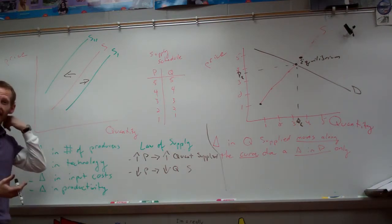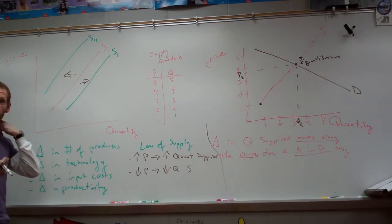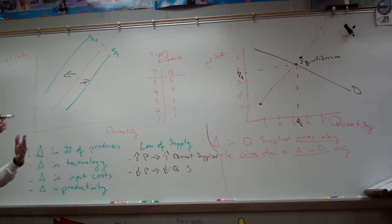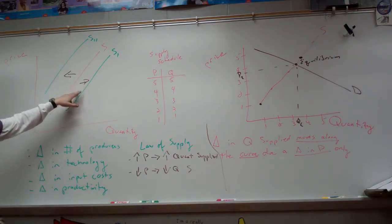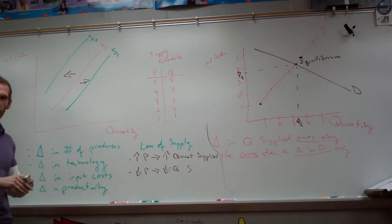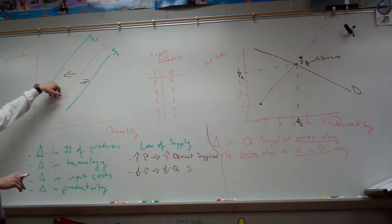Number one would be a change in number of producers. If there's a lot more producers, will it shift to the right or left? S sub 1 or S sub 2? It will shift to S sub 1. There are more producers. If there are less producers or companies in the area, then it will shift to the left, S sub 2.